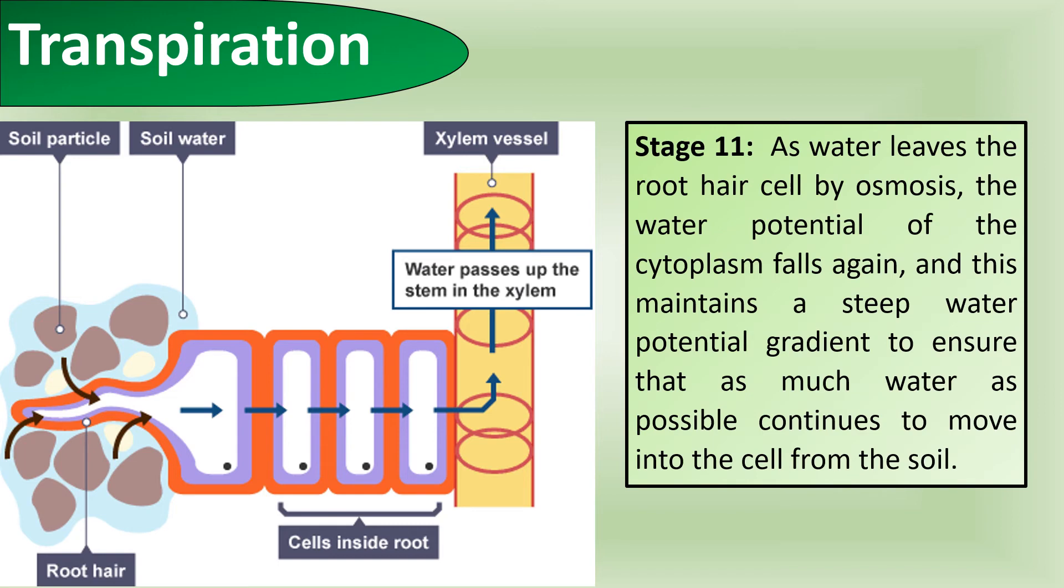As water leaves the root hair cell by osmosis, the water potential of the cytoplasm falls again, and this maintains a steep water potential gradient to ensure that as much water as possible continues to move into the cells from the soil.